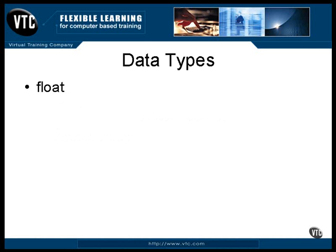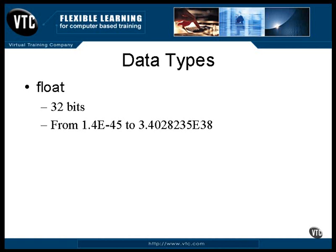A real number is one that has a decimal point. A float data type is 32 bits long and includes an exponent that specifies the location of the decimal point. The range on a real number is a bit different than on an integer. The smallest possible exponent is minus 45, meaning there can be up to 45 zeros behind the decimal point before the first digit, while a positive exponent of 38 moves the decimal point 38 digits to the right. There are only 23 bits used to represent the actual number, even though the decimal point can greatly change the magnitude.